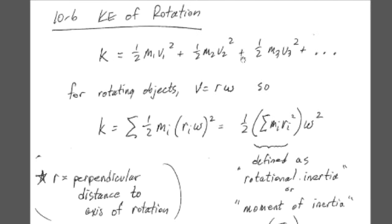is one-half mv squared of every piece of the blade, where one, two, three, dot, dot, dot, represents all the pieces of the saw blade.